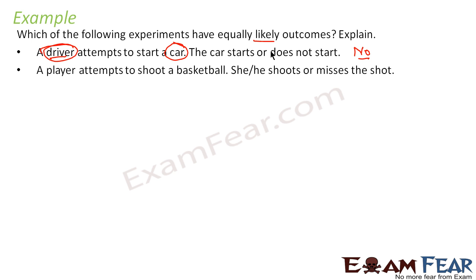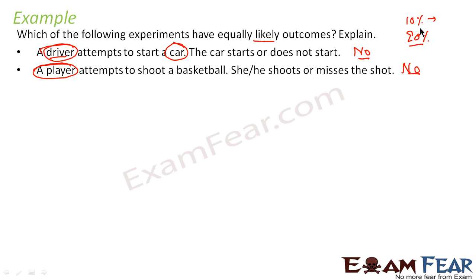Second example: a player attempts to shoot a basketball - does he score or miss? This is also not an equally likely event, because it depends on the quality of the player. An experienced player has about a 90% chance of hitting the shot, while a complete beginner might only have a 10% chance. The outcome depends on the player's skill level.